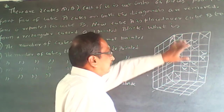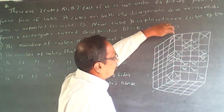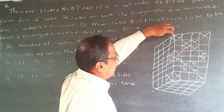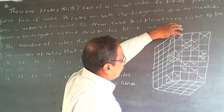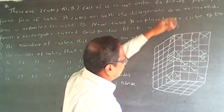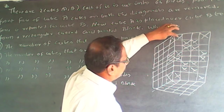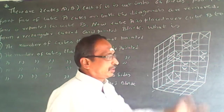A cube has 6 sides — this is not a smaller cube, a cube has 6 sides: 1, 2, 3, 4 on one side, and then the other side, and the bottom. That gives the 6 faces of the cube.